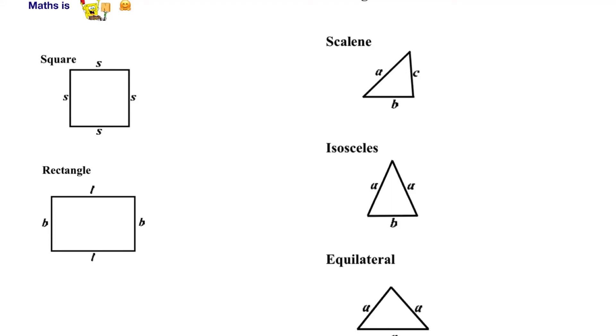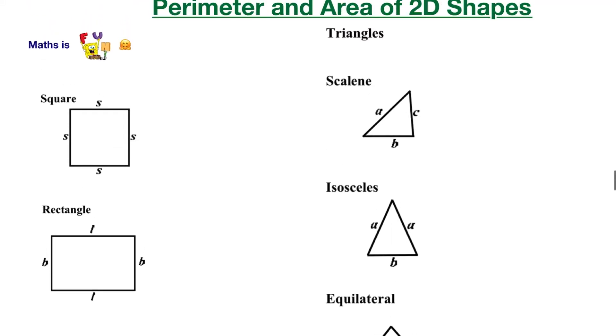Good morning grade 8 and 9. Today we're going to look at the perimeter and the area of 2D shapes. We're going to look at the square, rectangle, and the triangle.